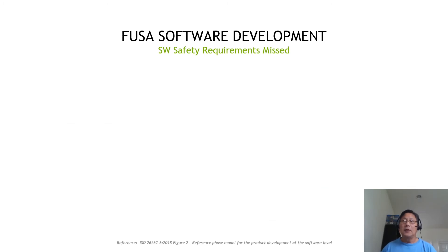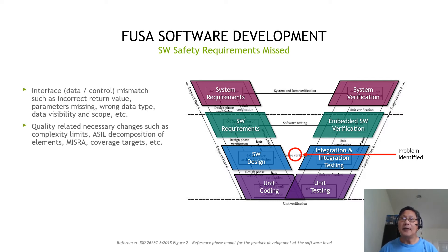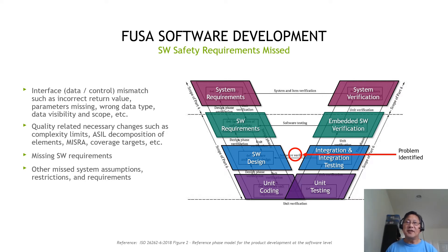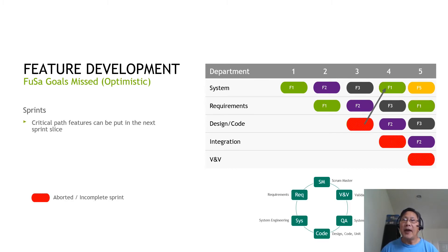However, whenever there are software requirements or software safety requirements missed — for example, when a software design problem is identified, or whenever there is a data interface or data control mismatch, quality-related unnecessary changes such as MISRA violations, missing software requirements, or other system assumption restrictions — in the optimistic case, the critical path features can be put into the next sprint slice.